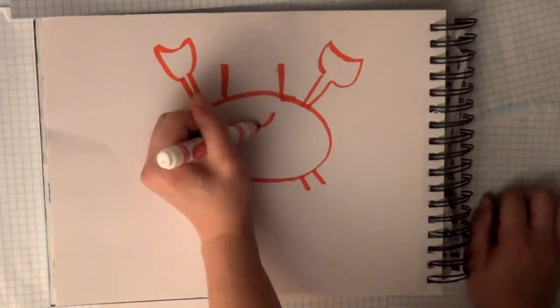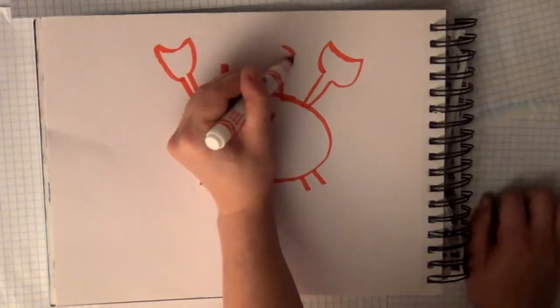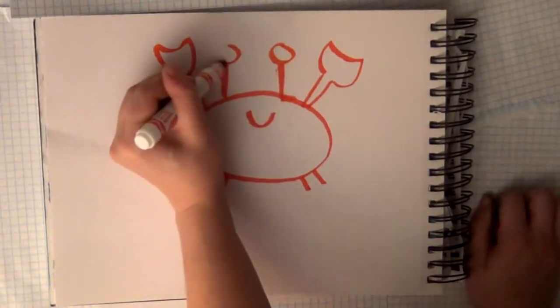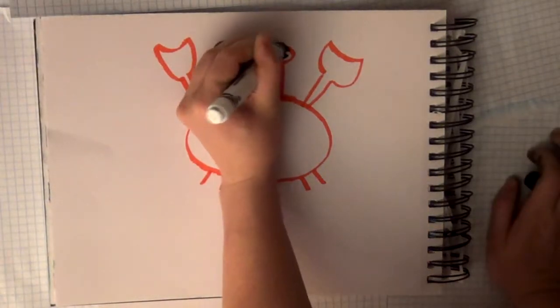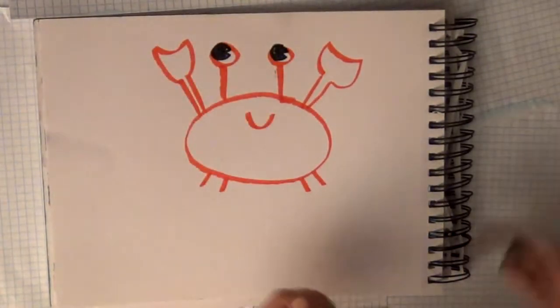The last step is to give him a face. You have to put a little smile on him and then you have to give him two round eyes. That's how to draw a crab. Next we're going to draw a whale.